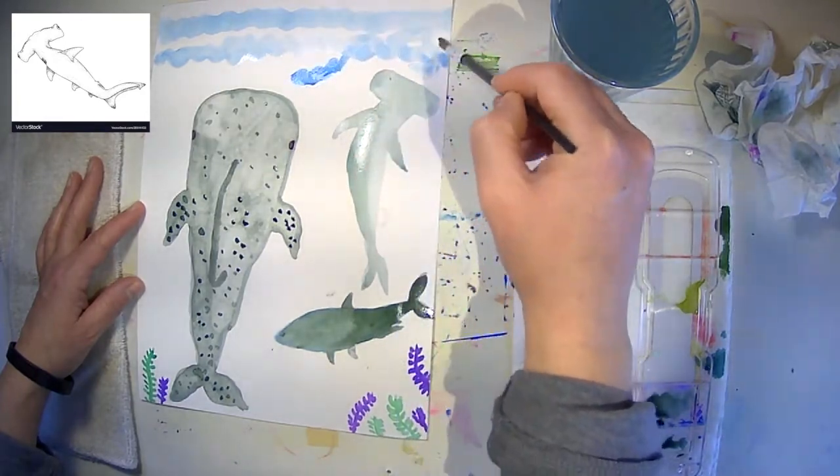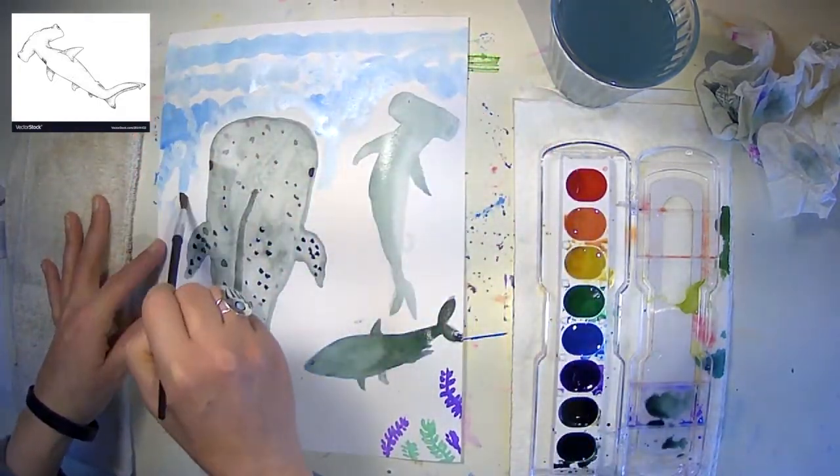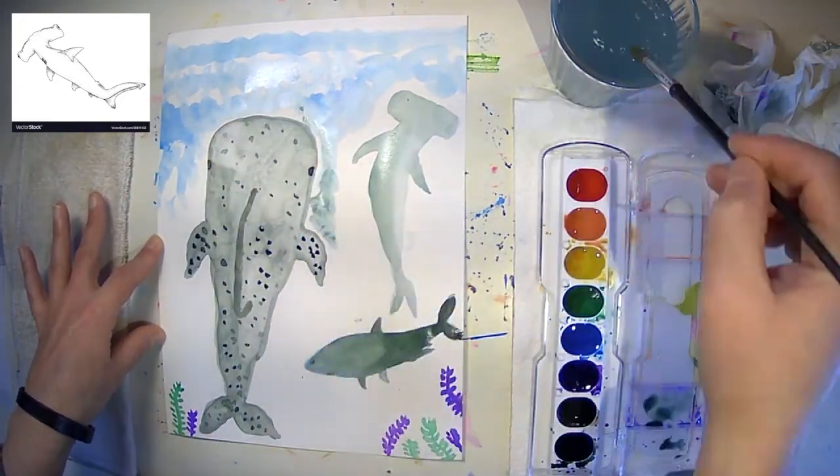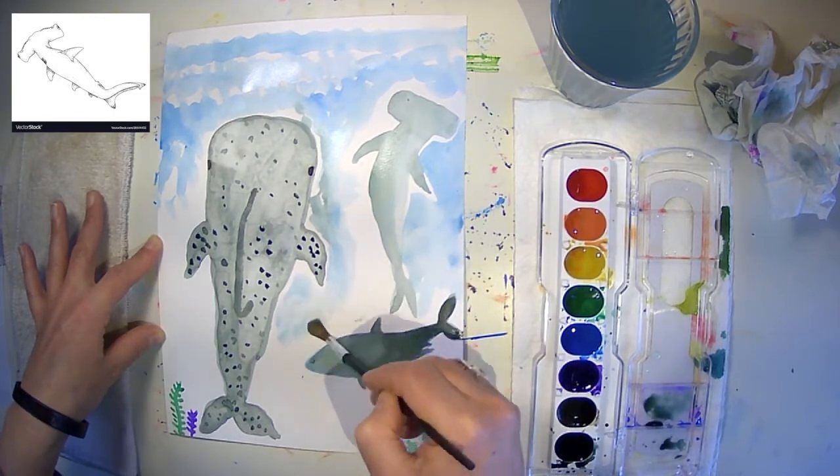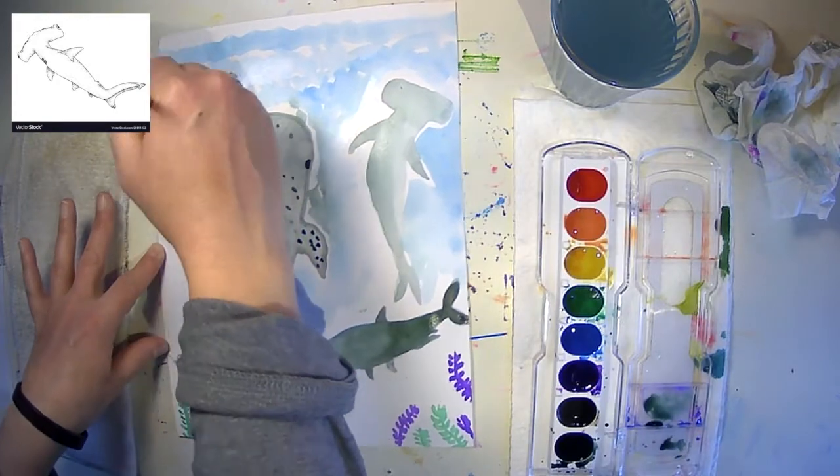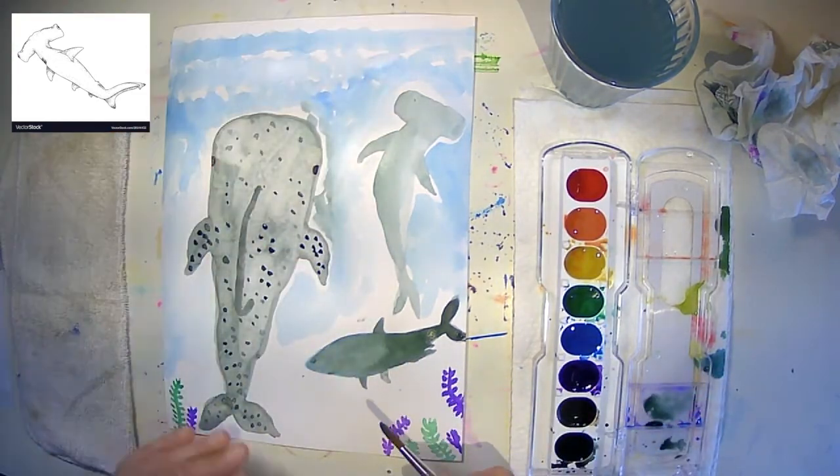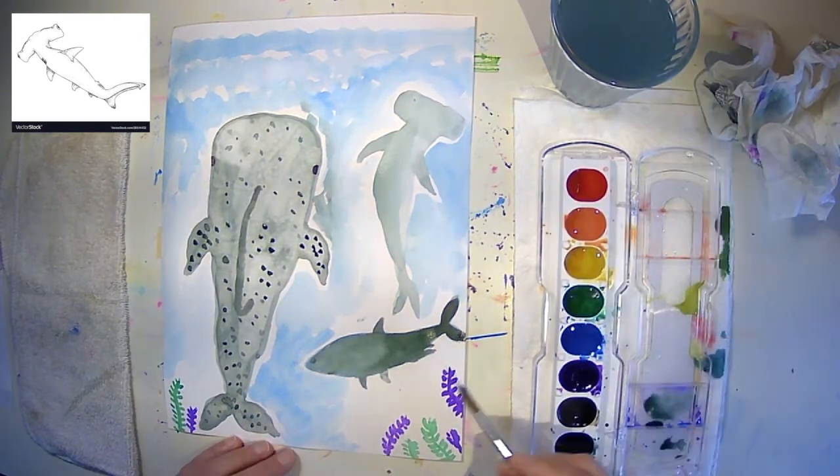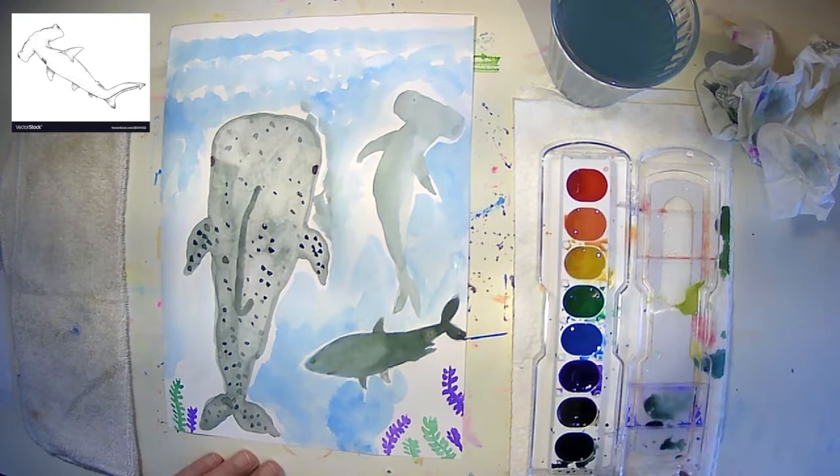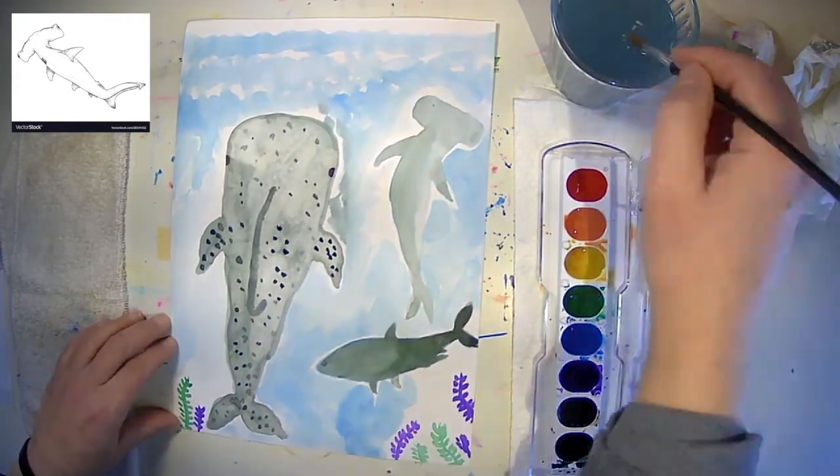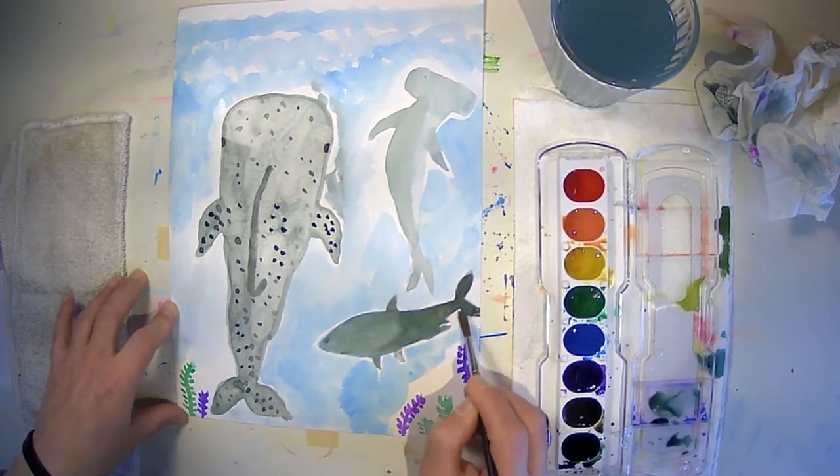So I'm not going to be touching these whales and sharks with the blue. I just want to give it a chance to dry, but I'm going to add some of the watery details around it. And if I go too close with the color, they sort of move and blend into each other. And right now, I don't want them exactly to blend.